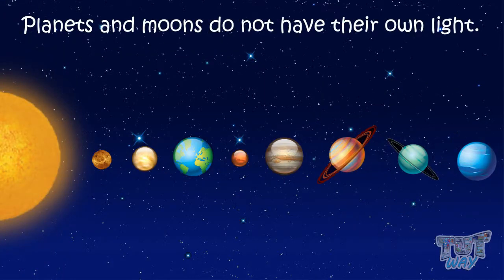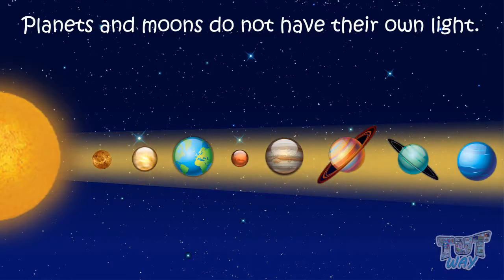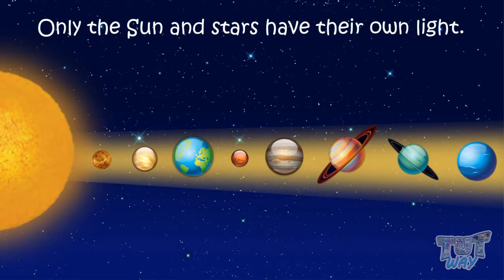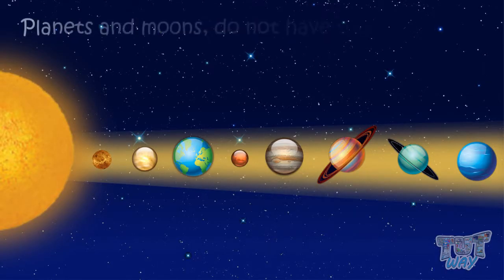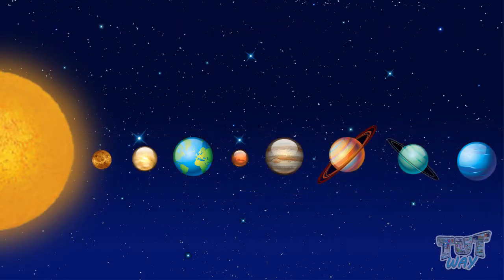Planets and moons do not have their own light. They shine when the light of the sun falls on them. Only the sun and stars have their own light. Let's learn about each planet one by one.